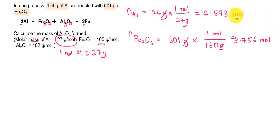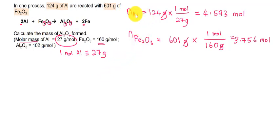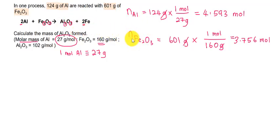Once you have the number of moles for each reactant, we can use two methods to determine the limiting reactant. The first method: compare reactant with reactant. The second method: compare reactant with product. If you use the second method, both reactants must be compared against the same product.